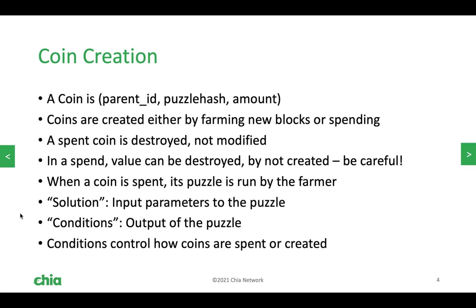There's an important thing to keep in mind: when you're developing your own smart coins, you control writing the code and also running the code. But when you put a spend out onto the blockchain, the person or entity that runs that transaction is a farmer. You transmit the spend out, it goes to as many nodes as you're connected to, and it waits in the mempool of every farmer who's accepted it. At some point, one of those farmers will farm a block, and if you're at the head of the queue, your spend will be included in that block if all of the checks go through.